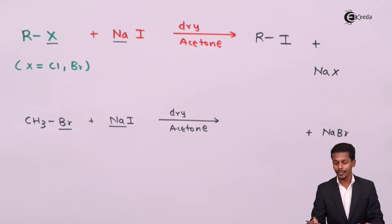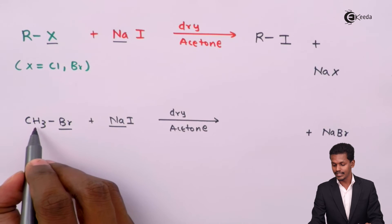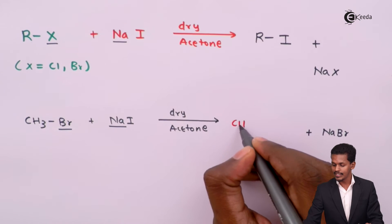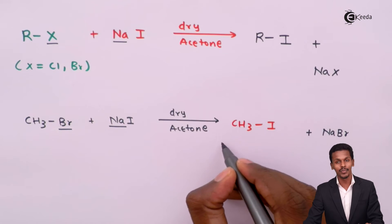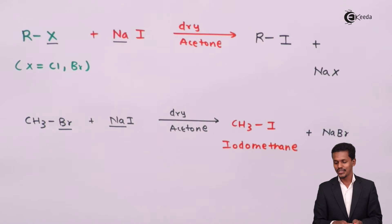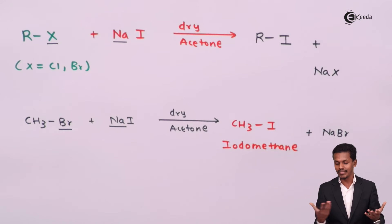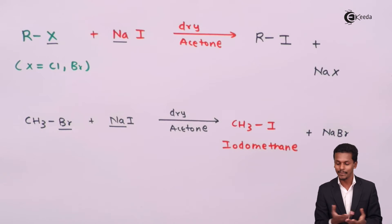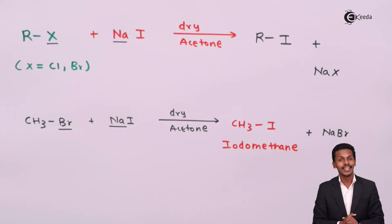In this reaction, Na and Br are removed as NaBr, and the product obtained is CH3I, also known as iodomethane. We can also try this with methyl chloride along with NaI in the presence of dry acetone, where the byproduct would be NaCl. This is the Finkelstein reaction.